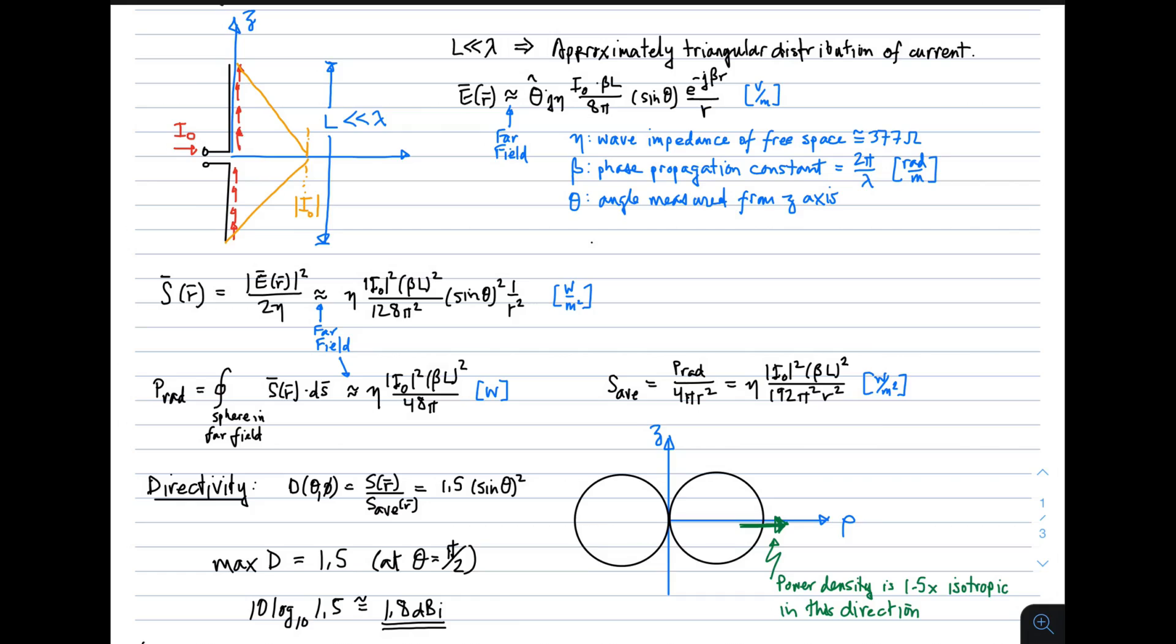Because we're eventually going to want directivity, we want to compute the power density. The power density at some position R, that's in the far field anyway. That's given by the magnitude of the electric field intensity squared divided by 2 times the wave impedance. We have everything we need to do that. We have the electric field expression here. So we can do that calculation.